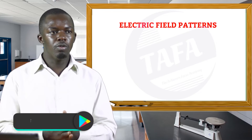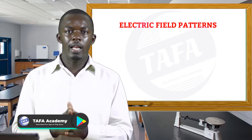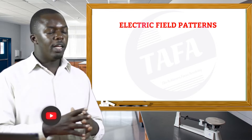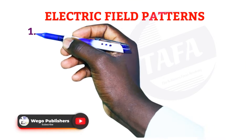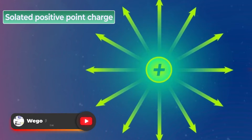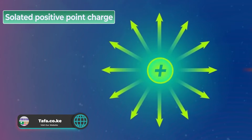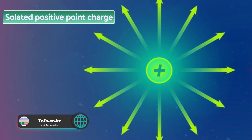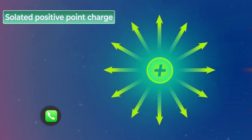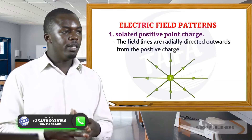Now we are going to see electric field lines forming what we call electric field patterns. We have various types of electric field patterns. The first one is an isolated positive point charge. From this diagram you can see the field lines are readily directed outwards from the positive charge, forming an electric field pattern.